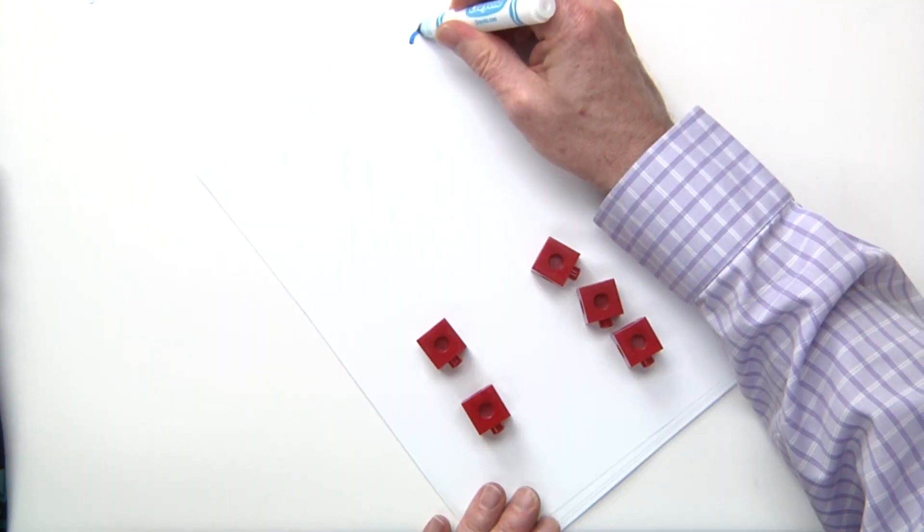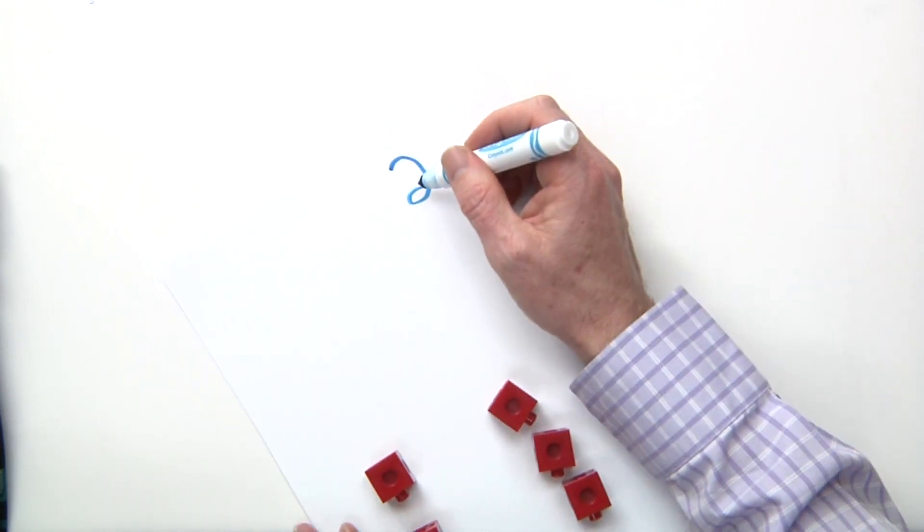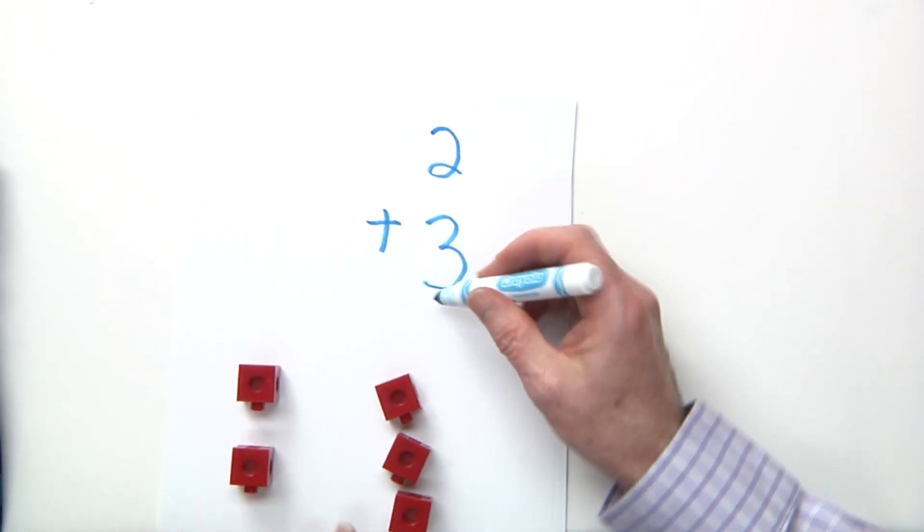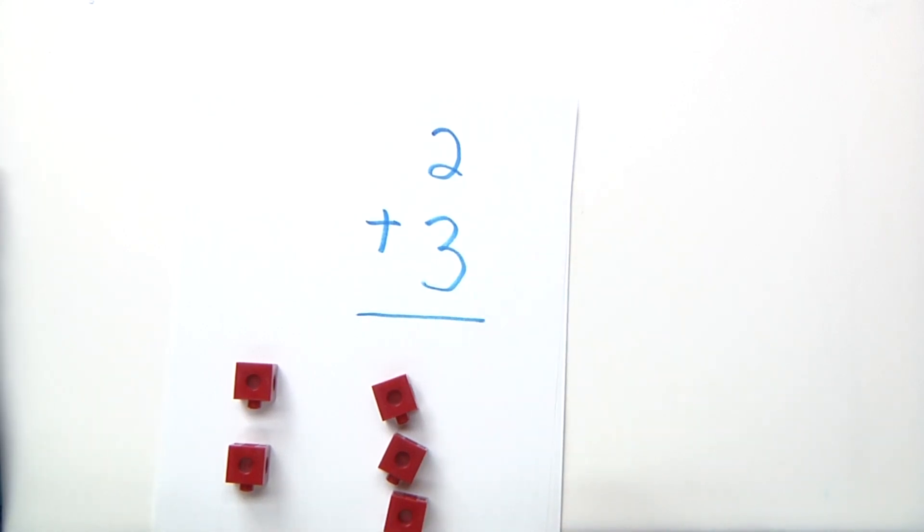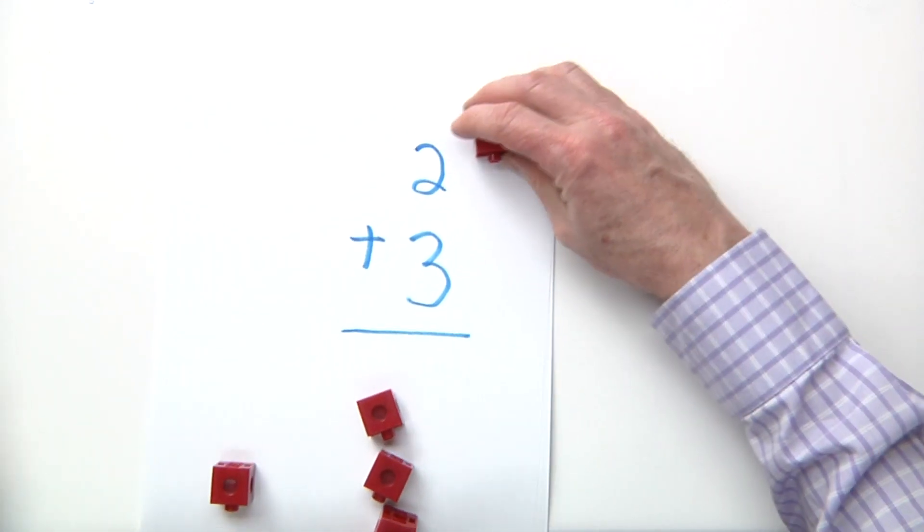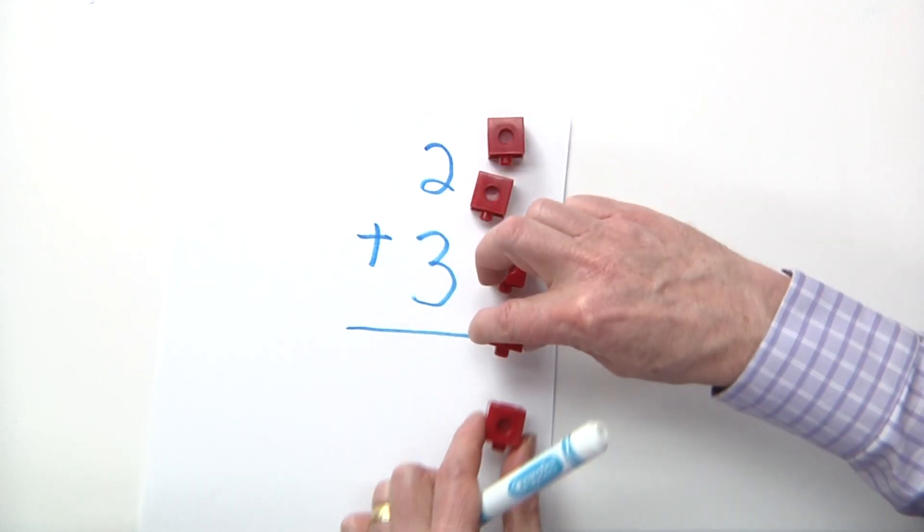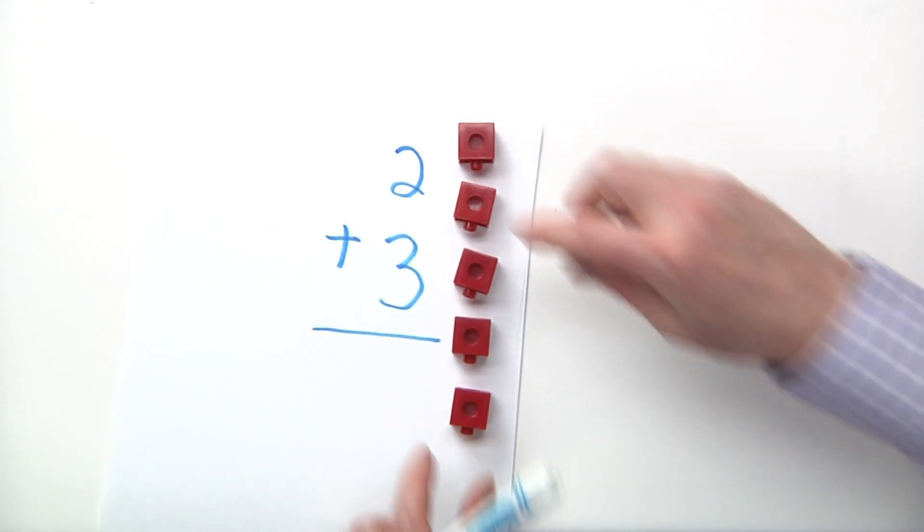I have two plus three. So, you can see I have two blocks right here and I have another three blocks right there. How can I find the answer?